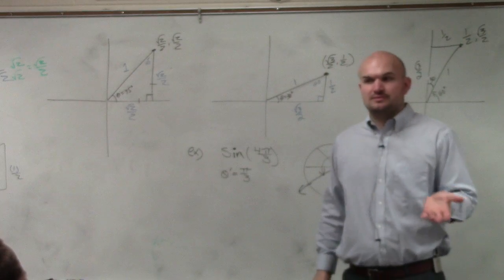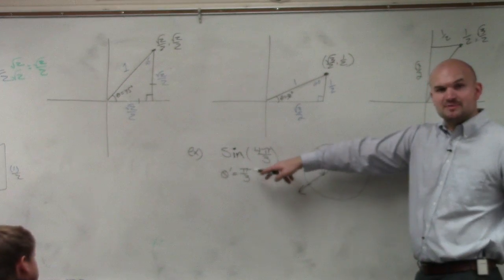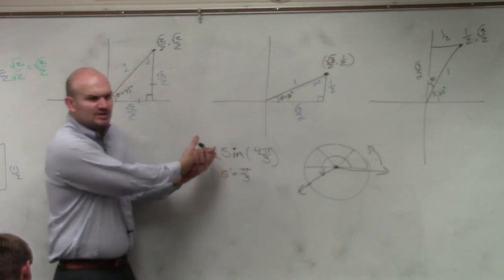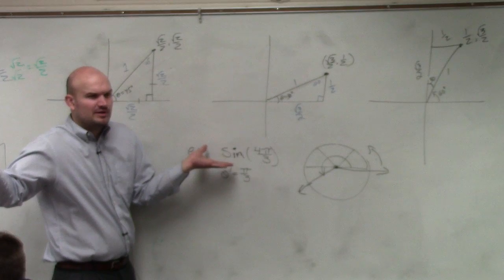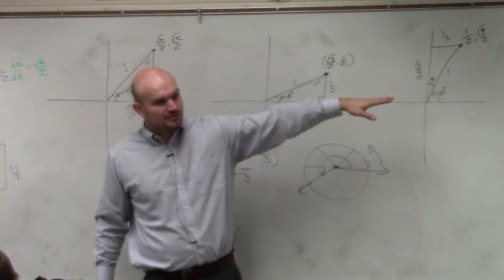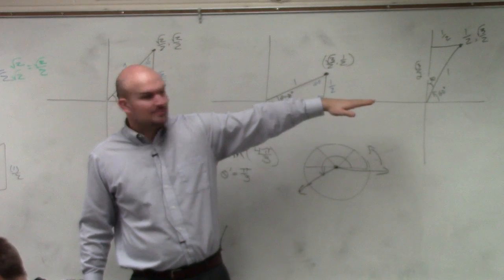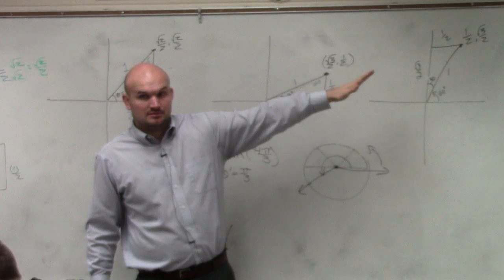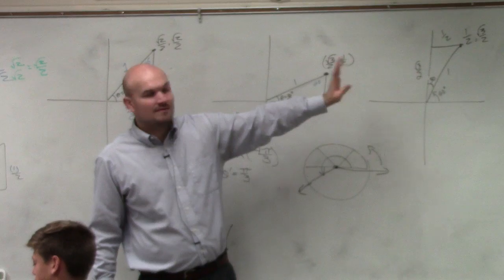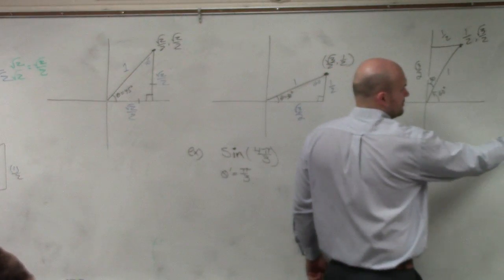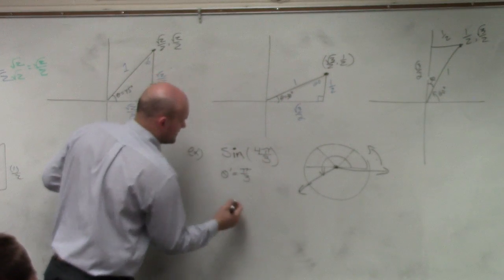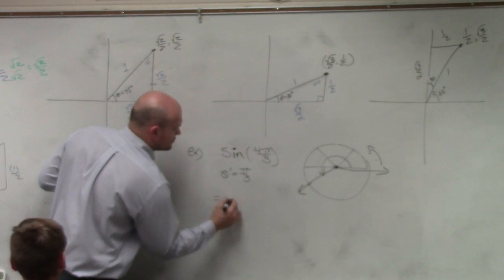Now, why is that important? Well, ladies and gentlemen, if I know my theta prime is pi over 3, and if we're looking for sine, which coordinate are we looking for, the x or the y coordinate? The y coordinate. Now, if you look at pi over 3, you look at your unit circle. What is the y coordinate at pi over 3? The y coordinate, we're looking for sine, the y coordinate at pi over 3. Square root of 3 over 2. So that's equal to square root of 3 over 2.